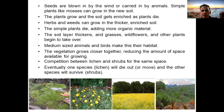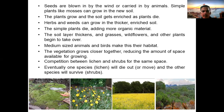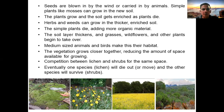Seeds could be blown by the wind or carried by animals from different regions. Simple plants like mosses can grow on this new soil. The plants grow and the soil gets enriched — as the plants die it is a kind of cycle. Plants utilize nutrients available in the soil as well as absorbing water and sunlight to prepare new complex molecules. The degradation of those plants further leads to enrichment of that soil. Because of these primitive plants, the soil gets enriched and herbs and leaves can now grow in the thicker, enriched soil.